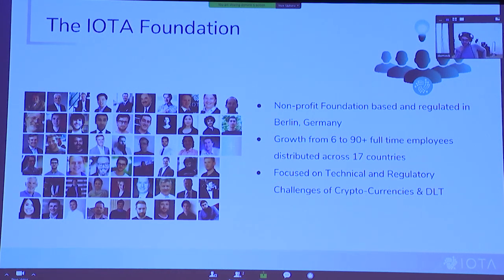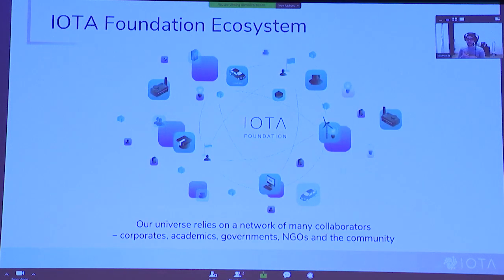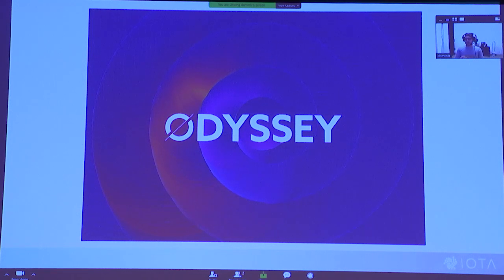The IOTA Foundation is close to 90 people, based in Berlin. We are very decentralized — like the technologies we create — and are in more than 15 countries. Our focus is on research and development but also on ecosystem building, which is one of the most important components for adoption. We work with big companies and governments, but we also have a very large and active community building in this permissionless environment. That's why the Odyssey hackathon is quite exciting and why we're excited to participate.